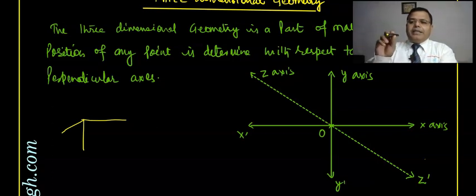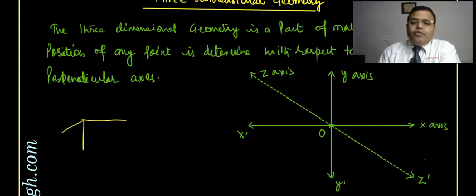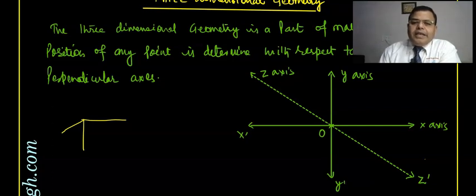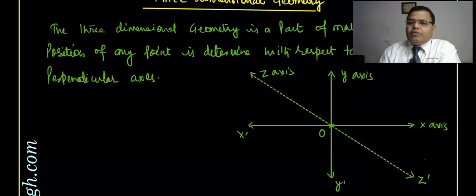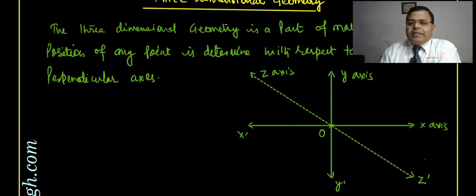If you draw a line like this coming towards you from the screen, and another perpendicular to both, you can observe in the room corner two lines of the roof perpendicular towards it and one coming down. These three mutually perpendicular lines at the origin divide the whole Cartesian coordinate system into eight parts, and these eight parts are called octants.